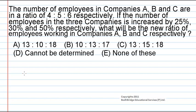The number of employees in companies A, B, and C are in the ratio 4:5:6 respectively.